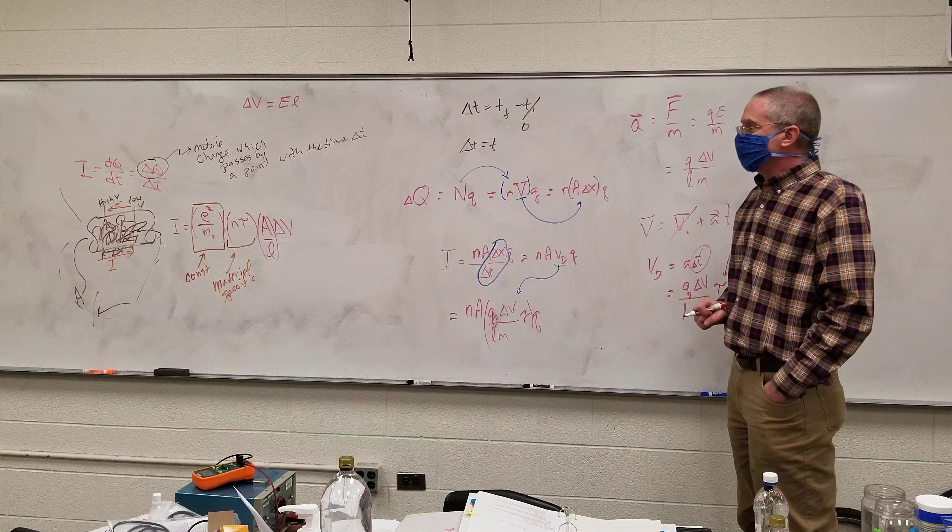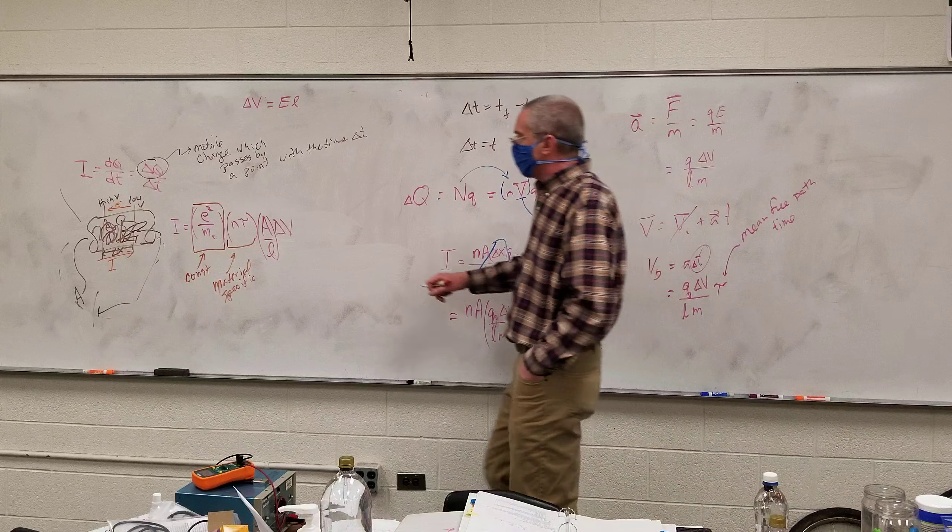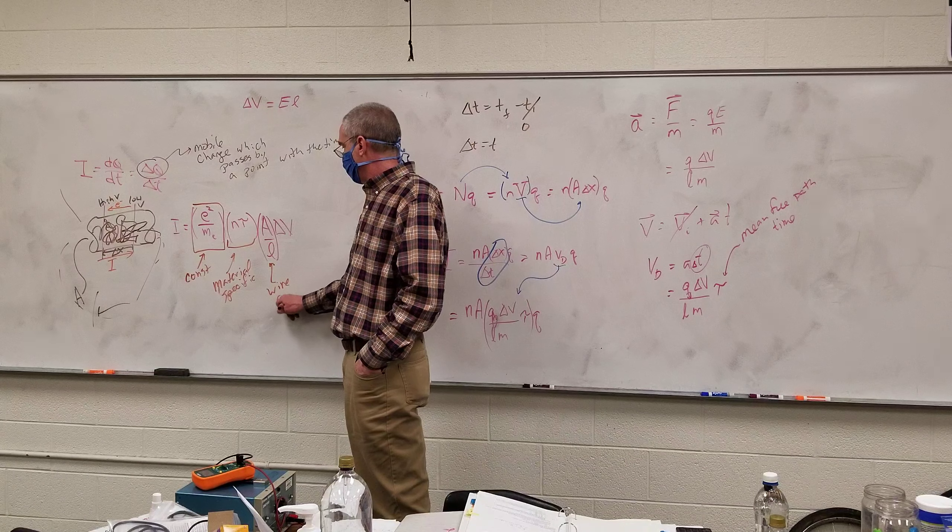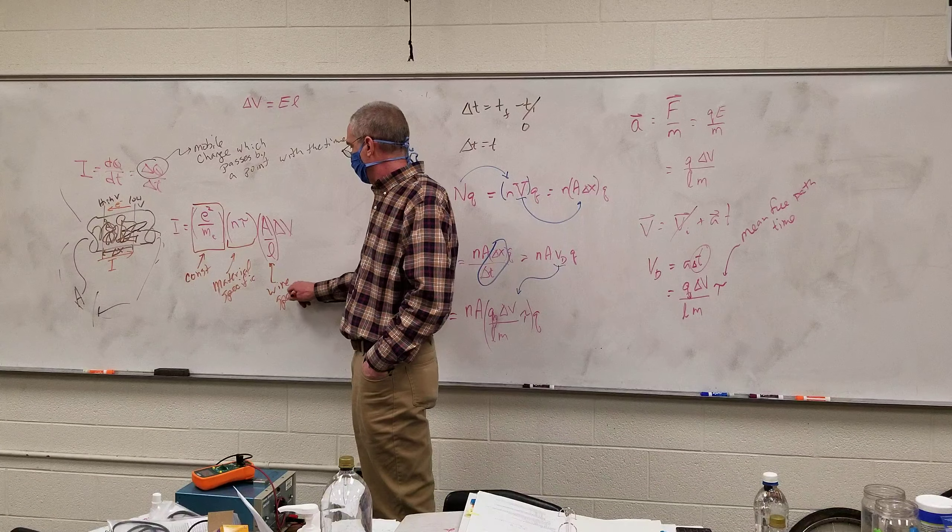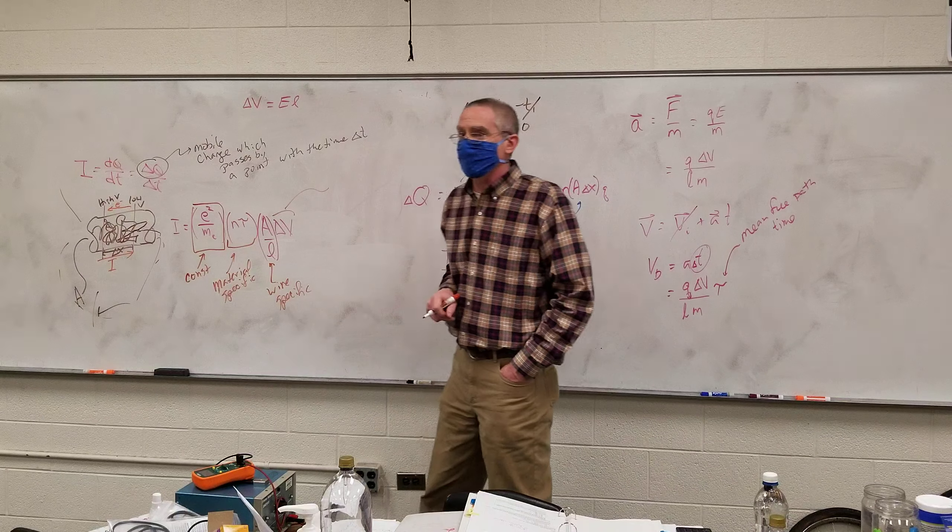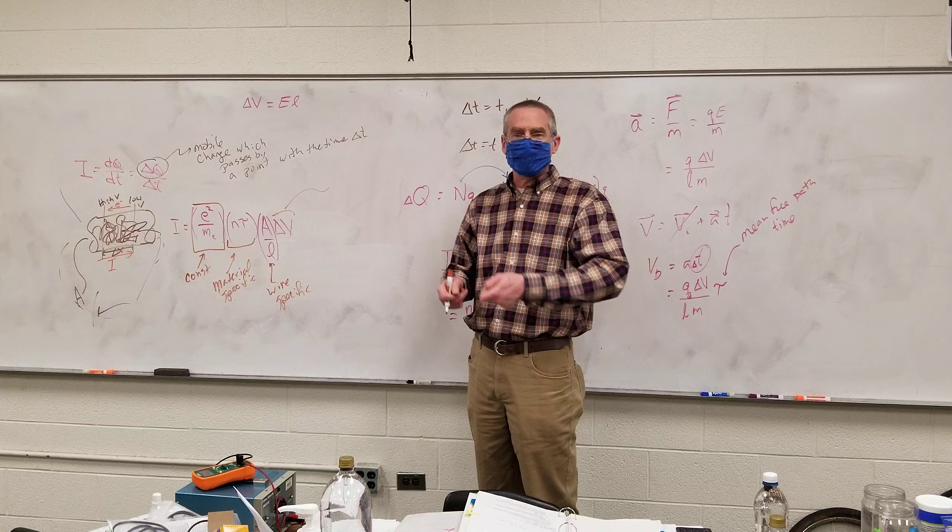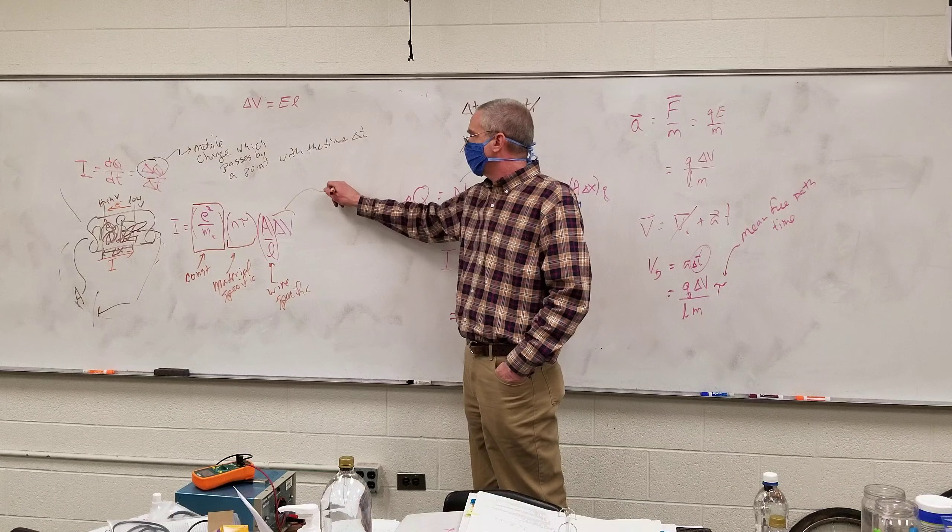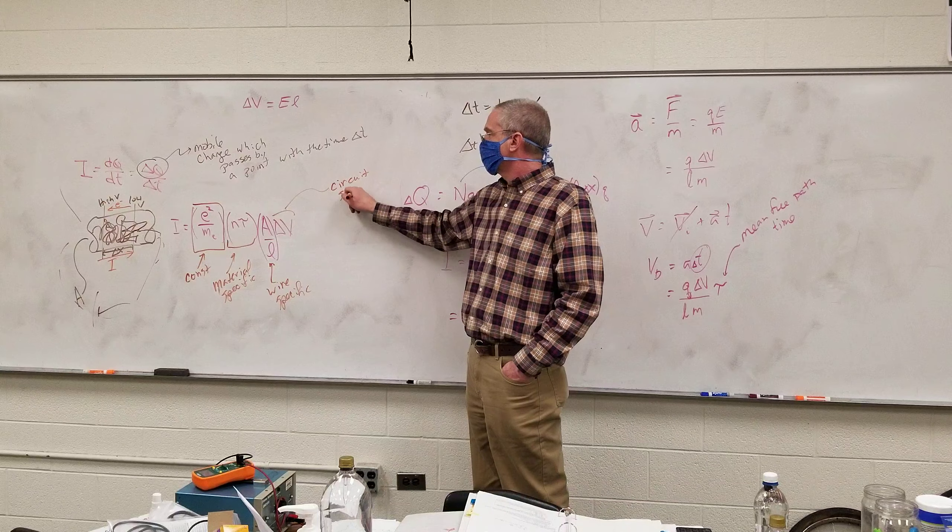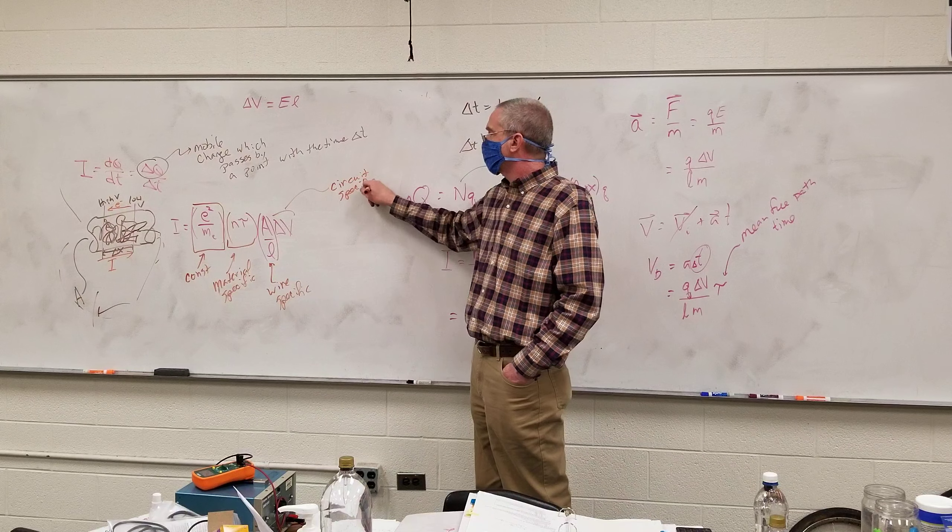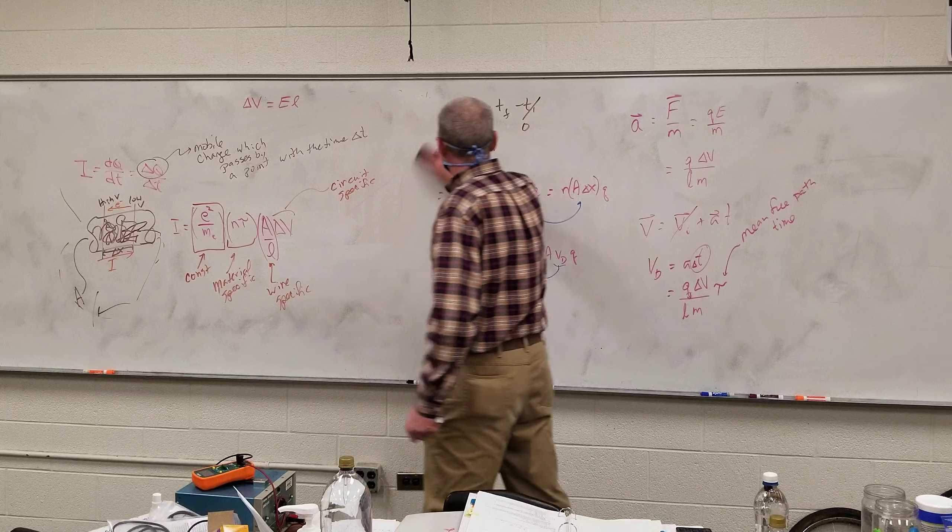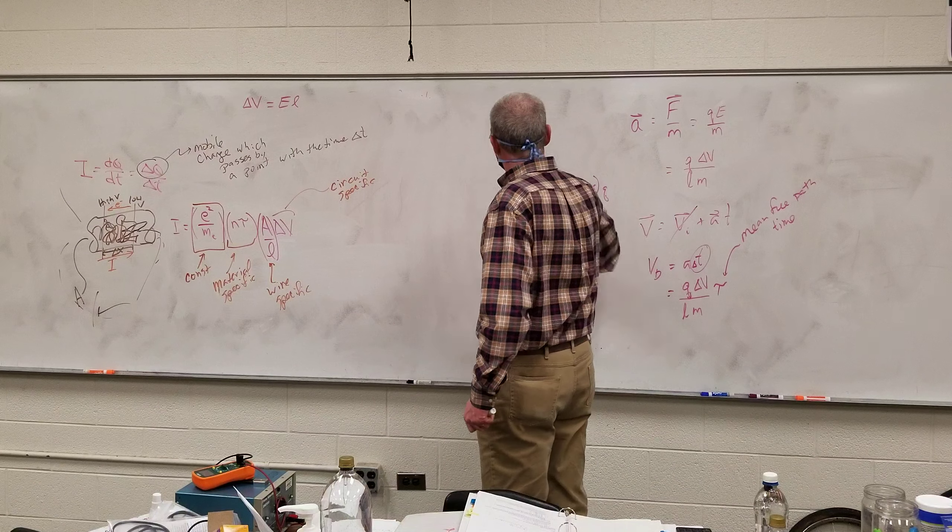A is the cross-sectional area of the wire. L is the length of the wire. So this is wire specific. And this is the voltage that you apply to it. In other words, basically, what kind of battery do you hook it up to? So this is, I guess, circuit specific.